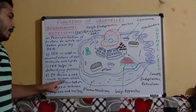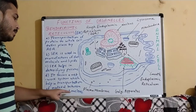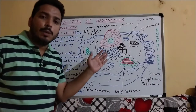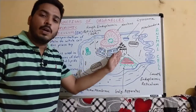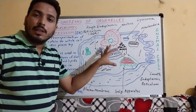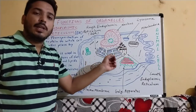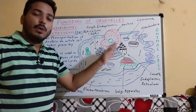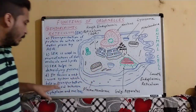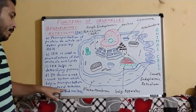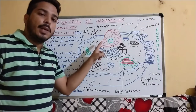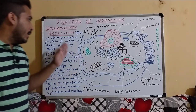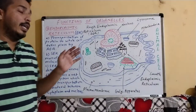Endoplasmic reticulum forms a network system which helps in transportation of material between the cytoplasm and nucleus. It provides a pathway for distributing materials like protein, lipid, and fat easily to different parts of the cell. So these are the functions of both smooth and rough endoplasmic reticulum.